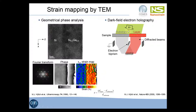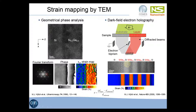The second technique we use is called dark-field electron holography. The principle is to first orientate the sample into a diffraction condition. We then use an electron biprism — a small conductive wire placed below the specimen. By applying a voltage to this wire, we can interfere the electrons diffracted by the substrate with the electrons diffracted by the layer. This creates a fringe pattern that can be seen as a magnified representation of the lattice planes. By using a reconstruction process in Fourier space, we can calculate a map of the strain in the sample.